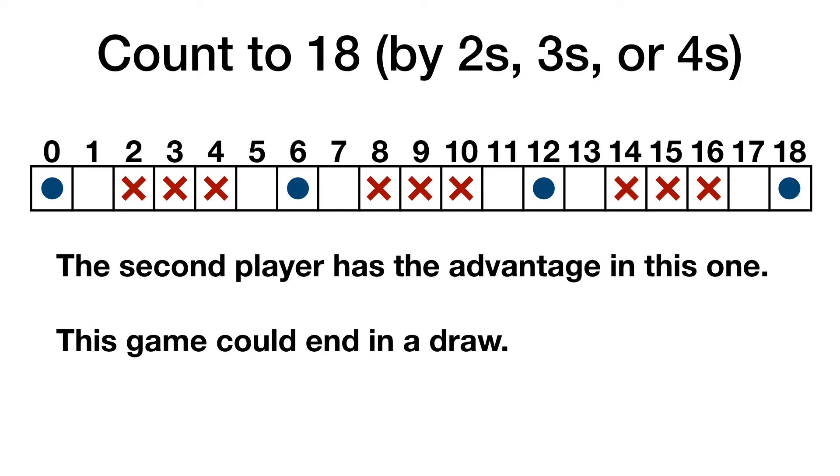Sometimes the game could end in a draw. For example, if we only allow counting by 2s, 3s, or 4s, then we might get stuck on 17. If it was your turn and you were on a number without a dot or an X, then you'd want to count your way to another blank square. Avoid the red squares at all costs.